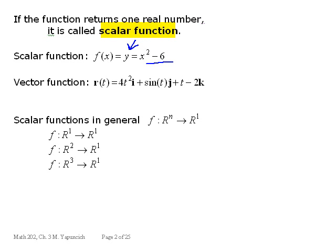For contrast, here is a vector function. It doesn't return one real number, instead it returns a vector, so it's called a vector function. So we're dealing here with scalar functions, and they can be of more than one variable.